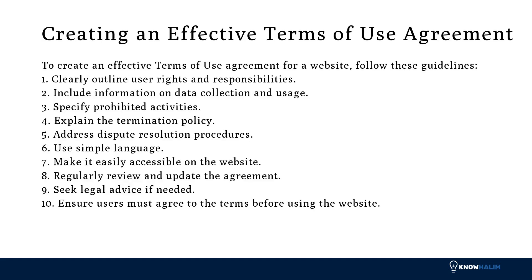Creating an effective Terms of Use Agreement: To create an effective terms of use agreement for a website, follow these guidelines: clearly outline user rights and responsibilities; include information on data collection and usage; specify prohibited activities; explain the termination policy; address dispute resolution procedures; use simple language; make it easily accessible on the website; regularly review and update the agreement; seek legal advice if needed; and ensure users must agree to the terms before using the website.